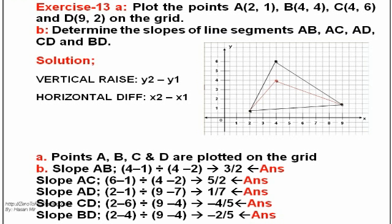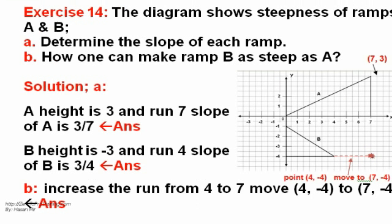Exercise 13A: Points A, B, C and D are seen on grid. B: Slopes of AB is 3 divided by 2, AC is 5 divided by 2, AD is 1 divided by 7. C: CD is -4 divided by 5 and BD is -2 divided by 5. Exercise 14A: Compute slopes A and B reading coordinates by Y2 minus Y1 divided by X2 minus X1. A: 3.75. B: Equals steep ramp A and B. Move B to 7 from -4.